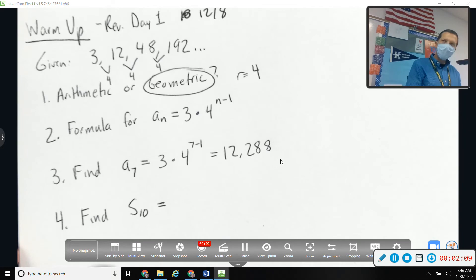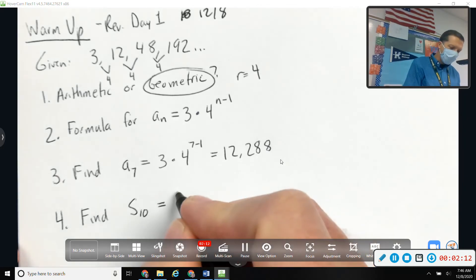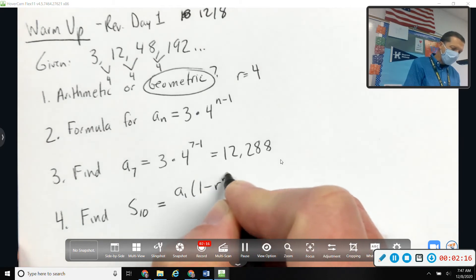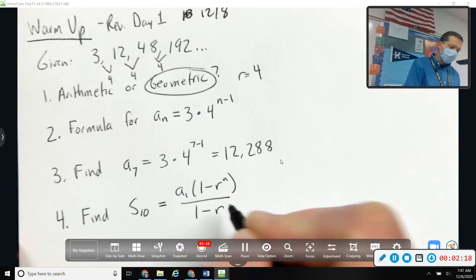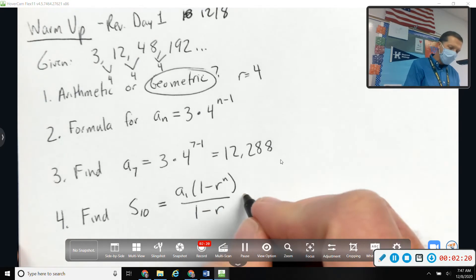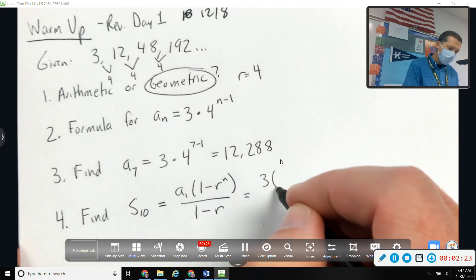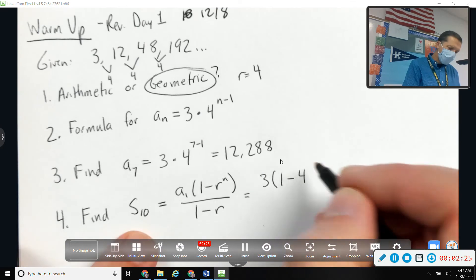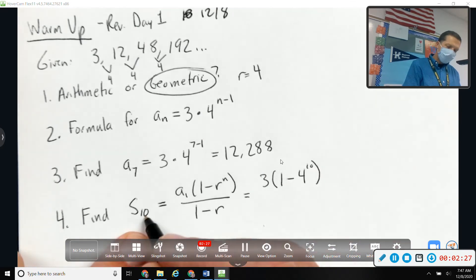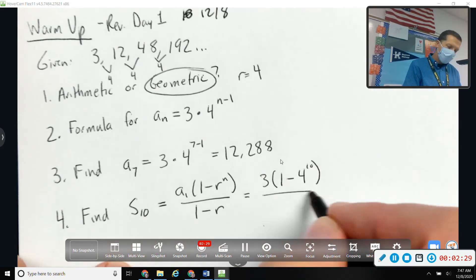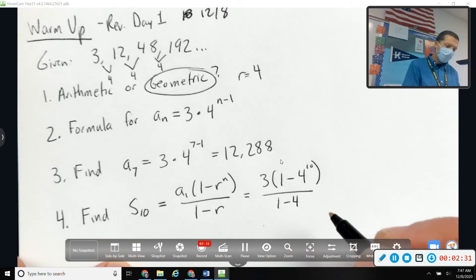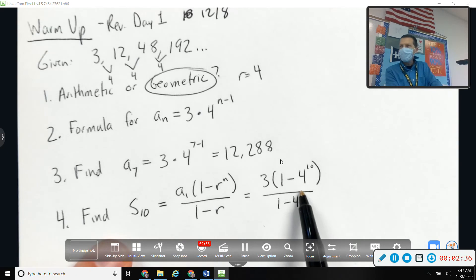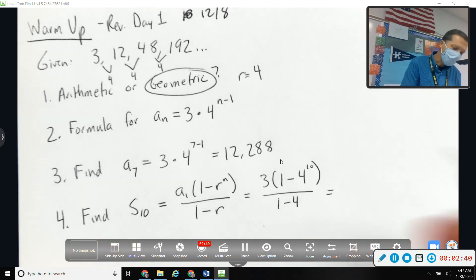So let me write this one and then we'll write all of them as kind of a review. So this one is a₁(1 - rⁿ) over (1 - r). So first term was three, one minus four to the tenth because we're doing ten terms, over one minus four. Also remember, be careful when r is negative or a fraction, you got to really be careful with parentheses and subtracting. This one's pretty straightforward so we'll be okay.